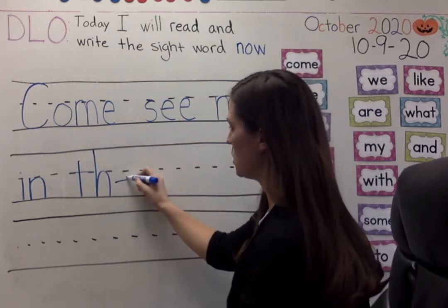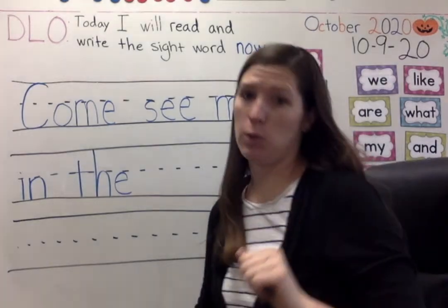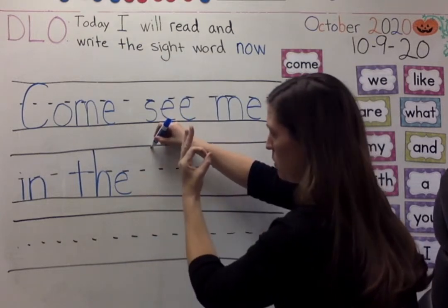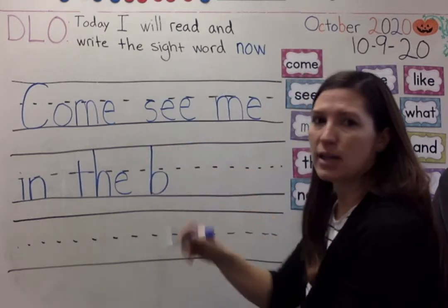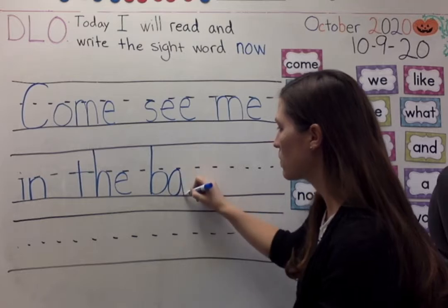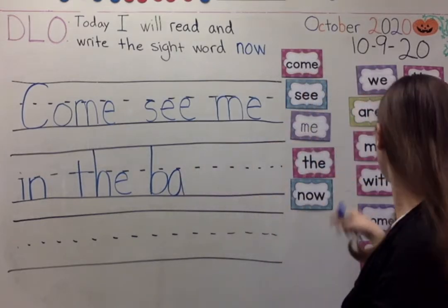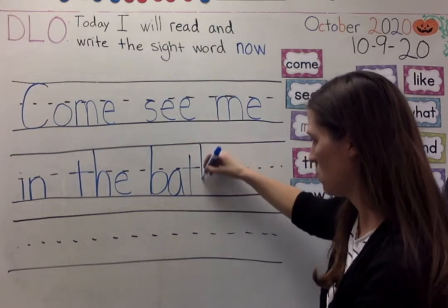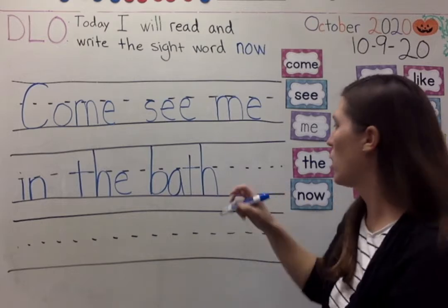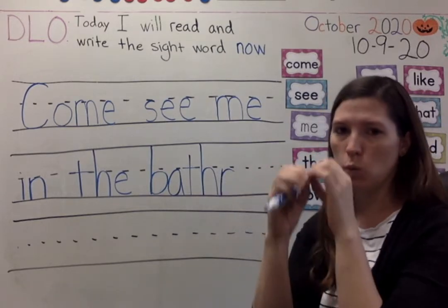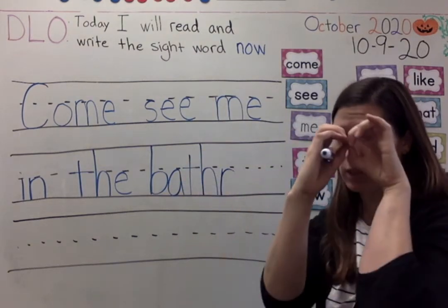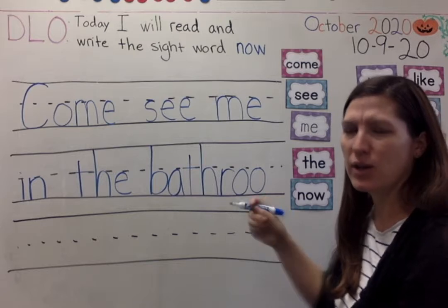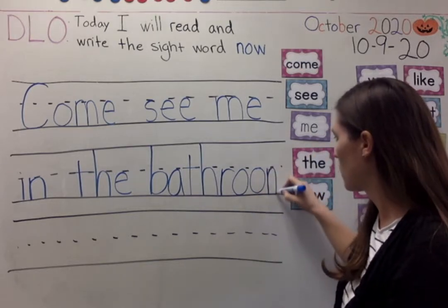Come see me in the — T-H-E. Now my sentence today is 'bathroom.' Bathroom's a long word, so I know I'm going to take up this whole space. Finger space. B-B-B. A — like in 'width.' Th — digraph th. Room — R-R. We talked about this yesterday. Ooh — double O. I'll have to squeeze it in here. M. Barely fit.